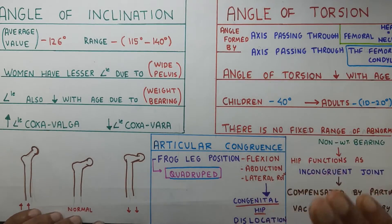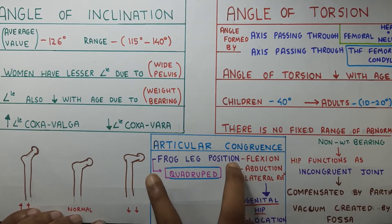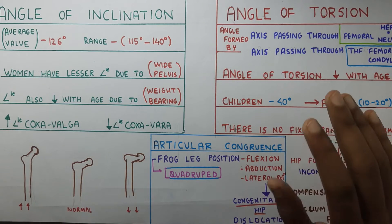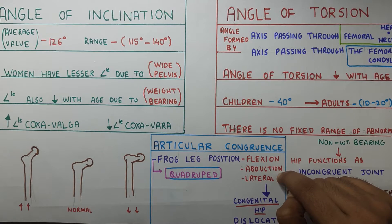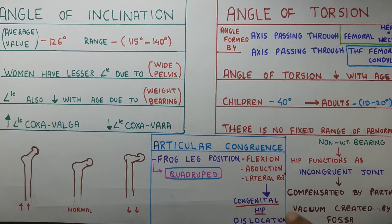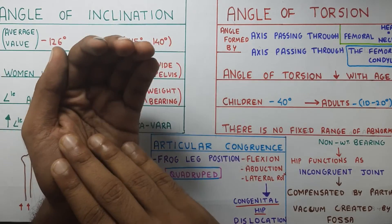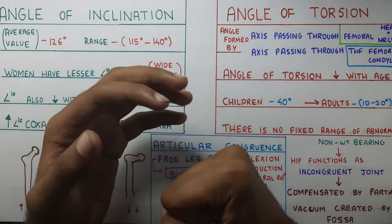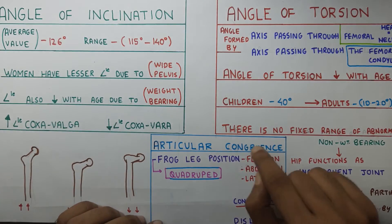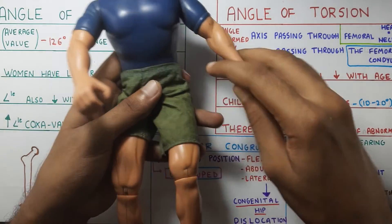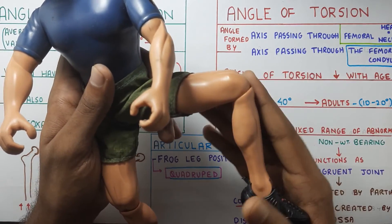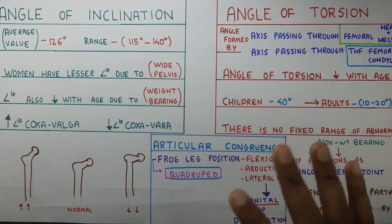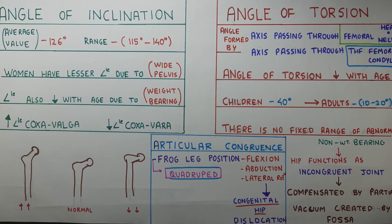The last part is articular congruence. Here we talk about the frog leg position, which is a very important position consisting of three components: flexion, abduction, and lateral rotation. This position is used in children with congenital hip dislocation, as it is a very effective way to get the head of the femur in contact with the acetabulum. The maximum contact of the femoral head with the acetabulum occurs in this position. This position is similar to the quadruped position.